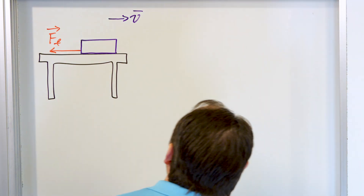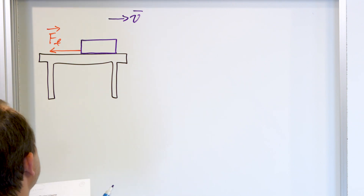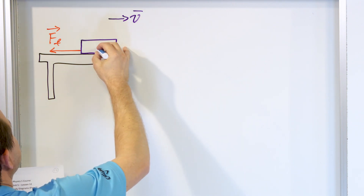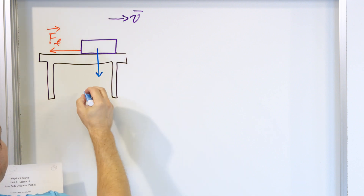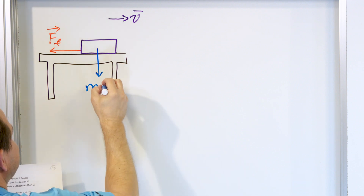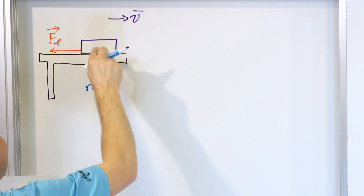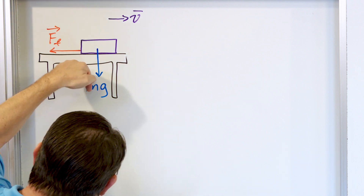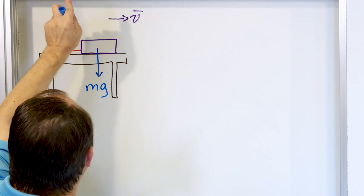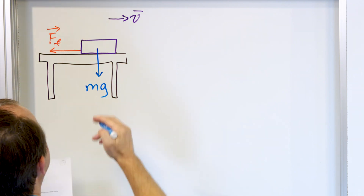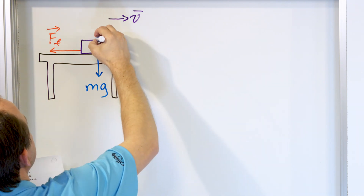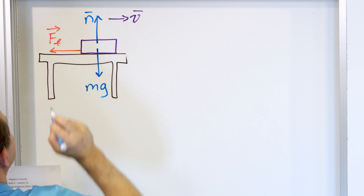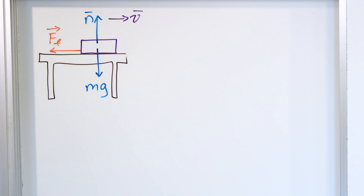What other forces are acting on this block? We have the force of gravity — the weight is mass times gravity acting on the block. The block is pushing into the table, and the table in turn pushes back into the block. That force acting upward is called the normal force.